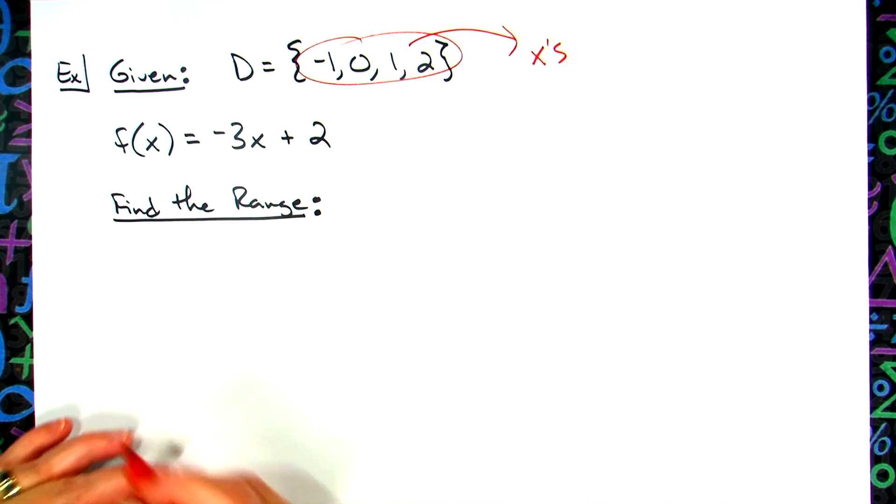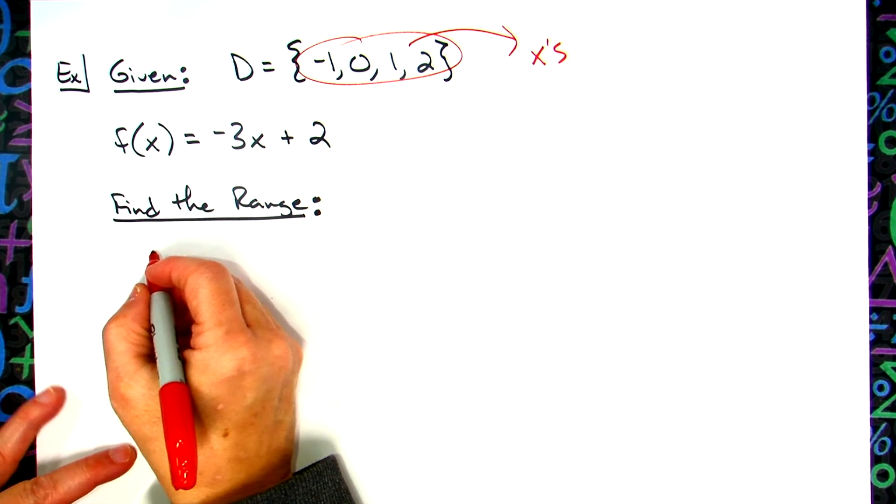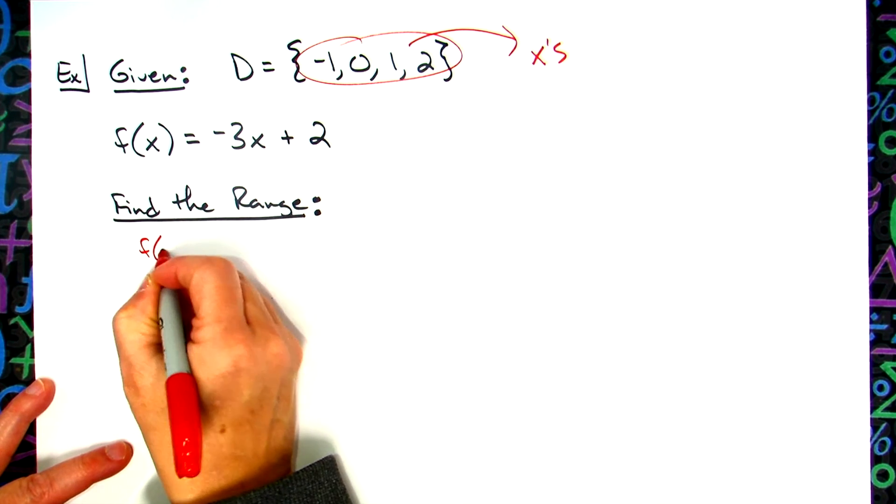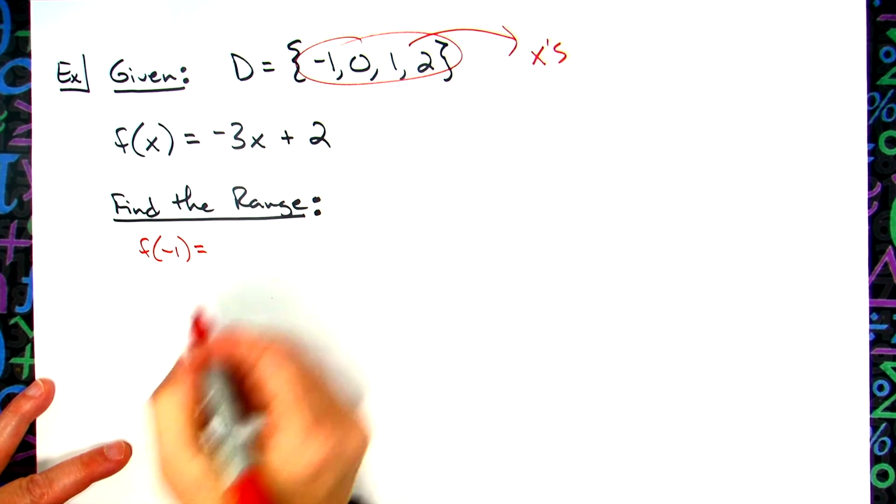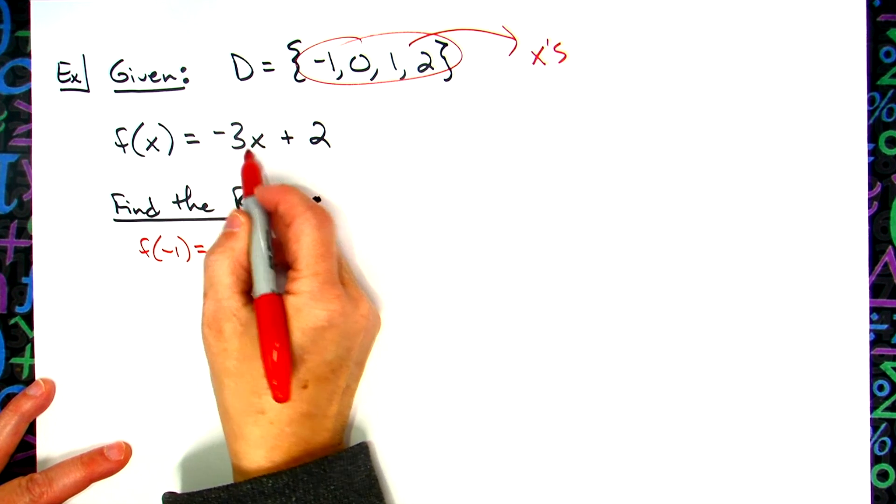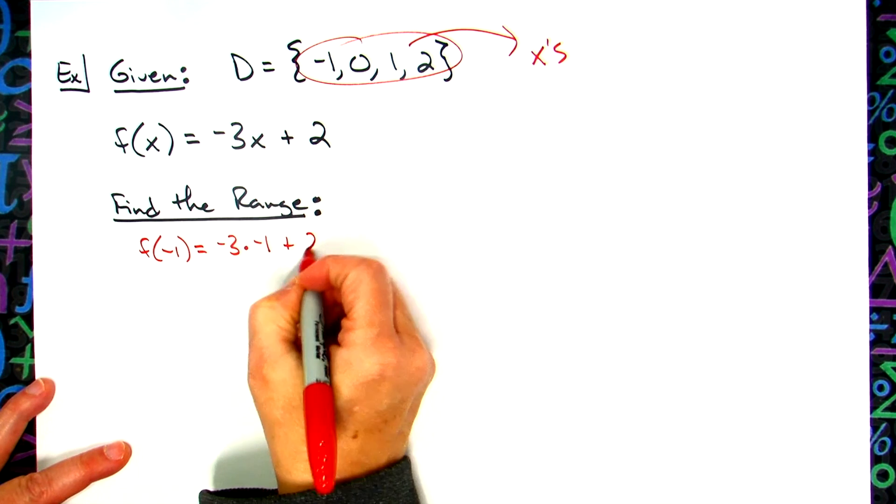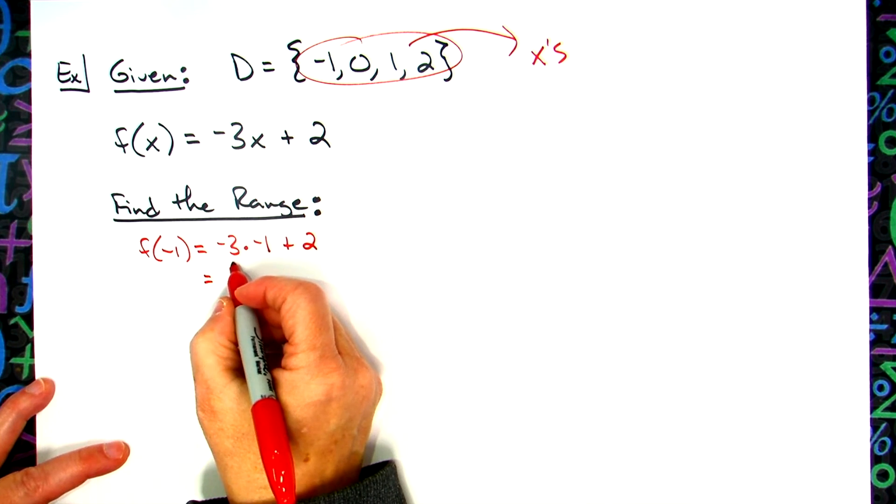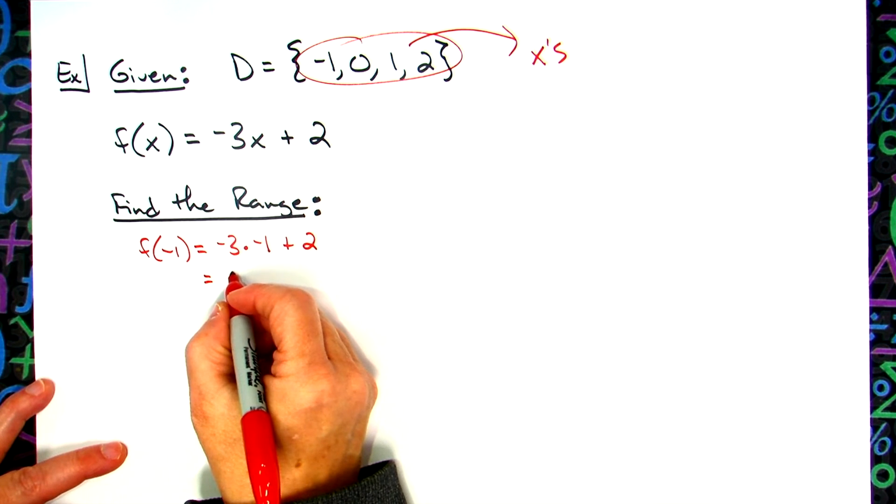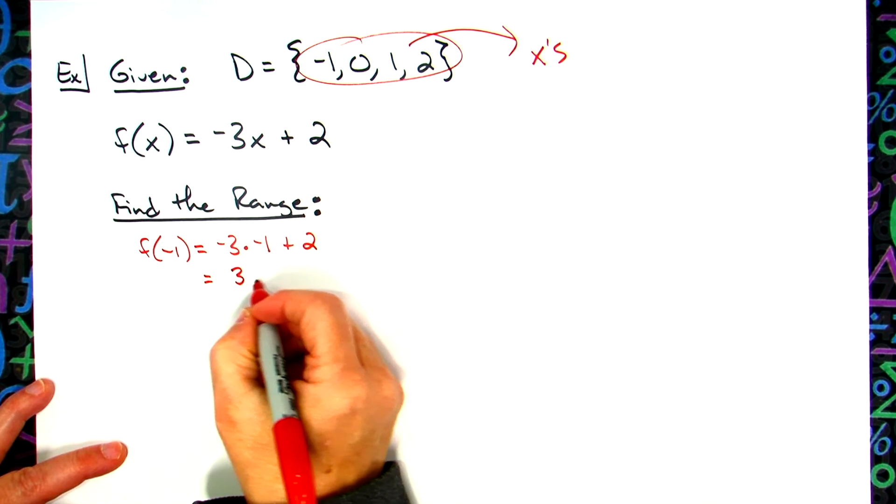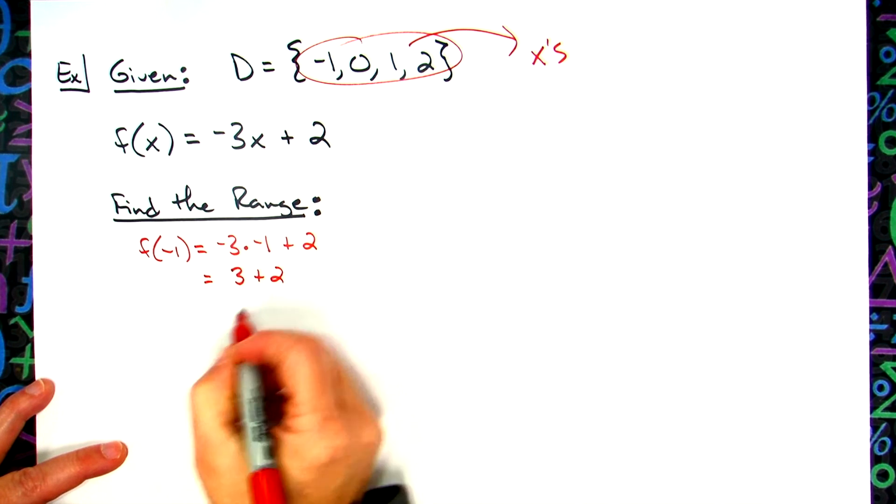Okay, so we can do it in a variety of different ways. Let's just do it using function notation. So I'm going to plug in the -1 first. Negative 3 times negative 1, and then plus 2 more. Negative 3 times negative 1? Positive 3 plus 2 gives me 5.